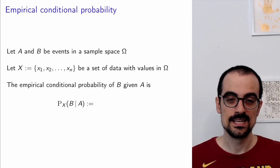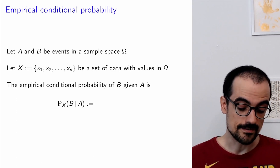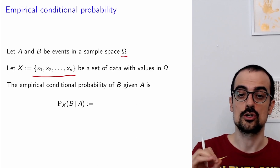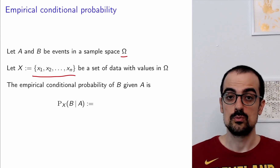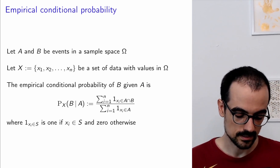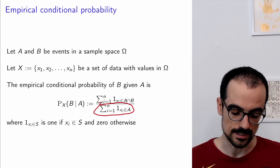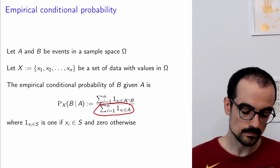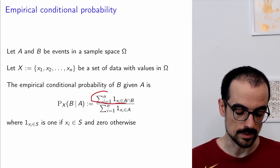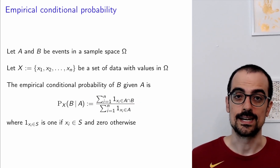In general, we estimate empirical conditional probabilities in this way. If A and B are events in a sample space omega, and we have n data points within omega, the empirical conditional probability of B given A is obtained by restricting ourselves to data points which are in A — this is captured by the indicator function equal to 1 if the data point is in A and 0 otherwise, giving the number of points in A — and then computing the fraction of those that are also in B. That's how we define empirical conditional probabilities.